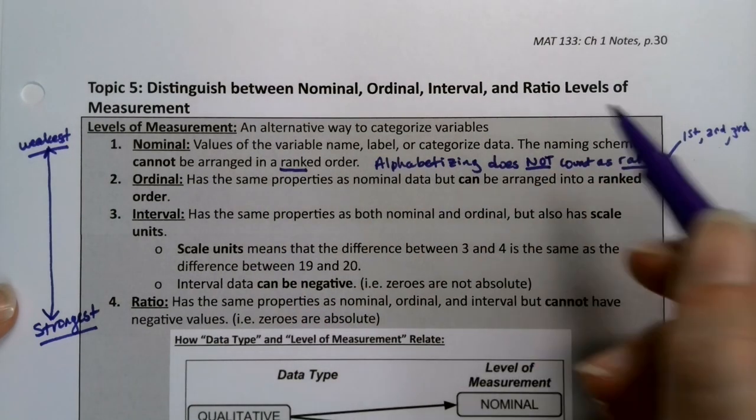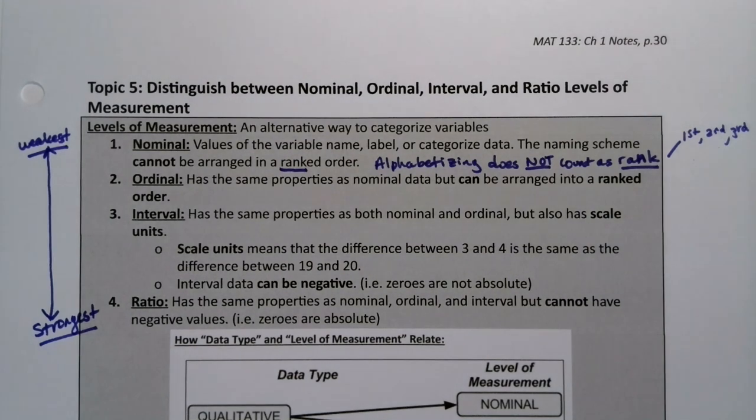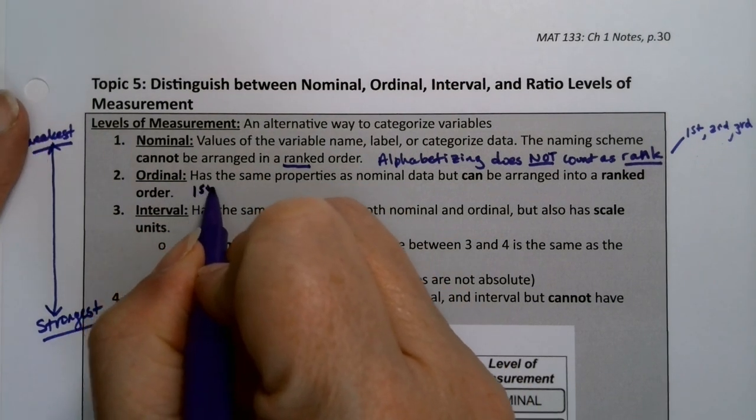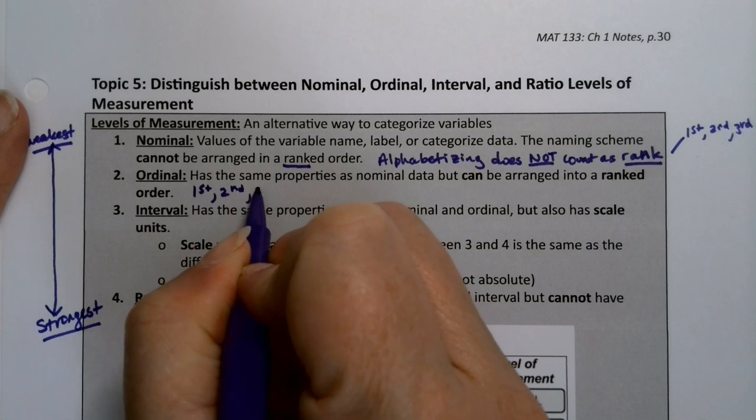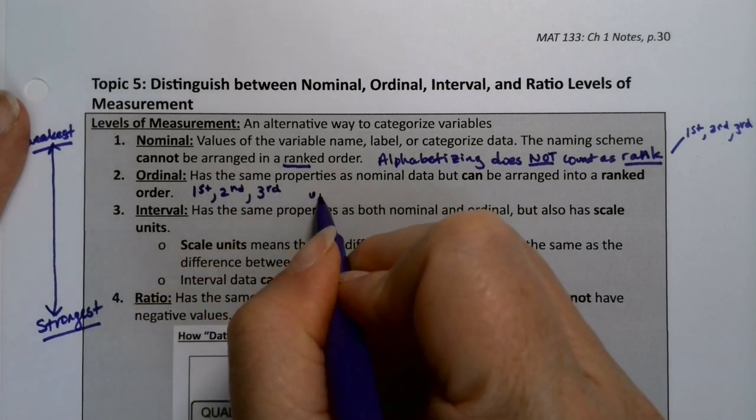Rank means somebody's better than somebody else. Rank means first, second, third. I can tell who's better than whom. That cannot happen with nominal data. Rank is something very specific, like gold, silver, bronze. That's a rank. Ordinal, for example, is that.